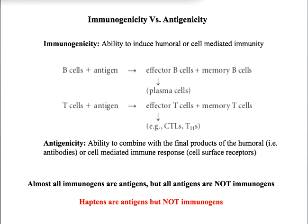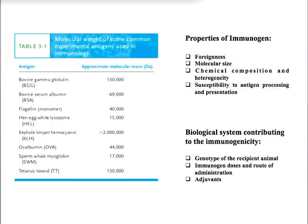Now let us talk about the properties of an immunogen. Number one is foreignness. The greater the phylogenetic distance of a particular molecule under consideration, the more is the structural disparity and the more is the foreignness. Therefore, more foreignness means more immunogenicity evoked.